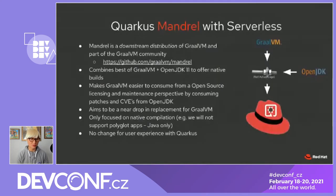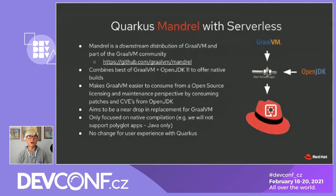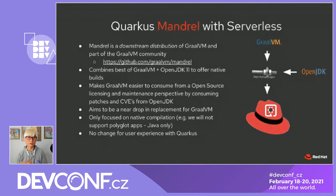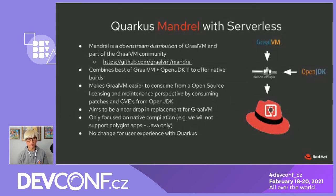How does Quarkus support the native compilation strategy? Native compilation comes from GraalVM technology, invented by Oracle, with a community edition and an enterprise edition. Quarkus supports the Mandrel downstream project from GraalVM, which is aligned to OpenJDK technology. We also maintain security fixes such as CVEs and add enterprise capabilities such as debugging and monitoring. This is the supported path for Quarkus native compilation.